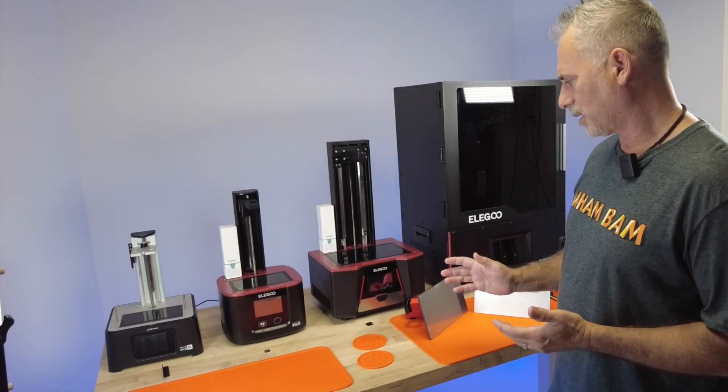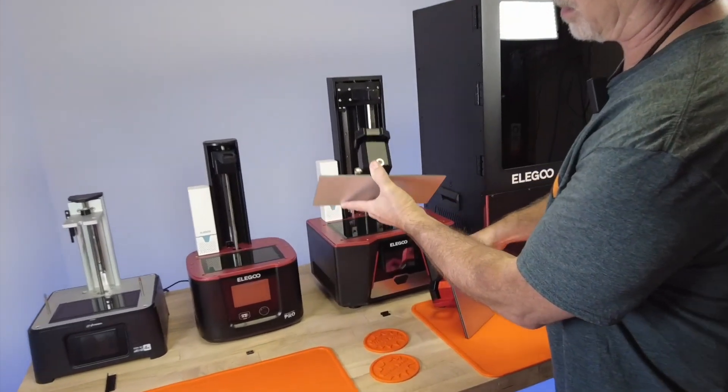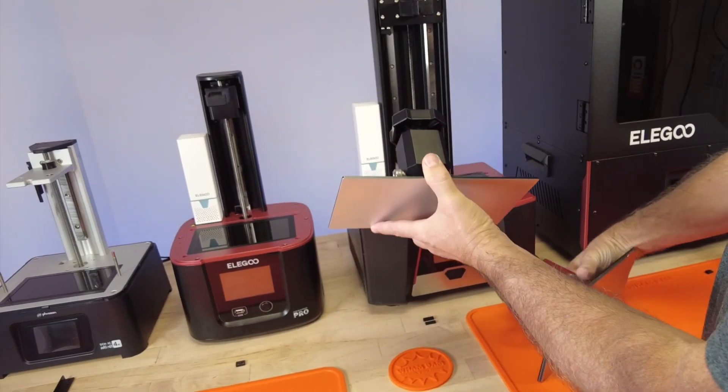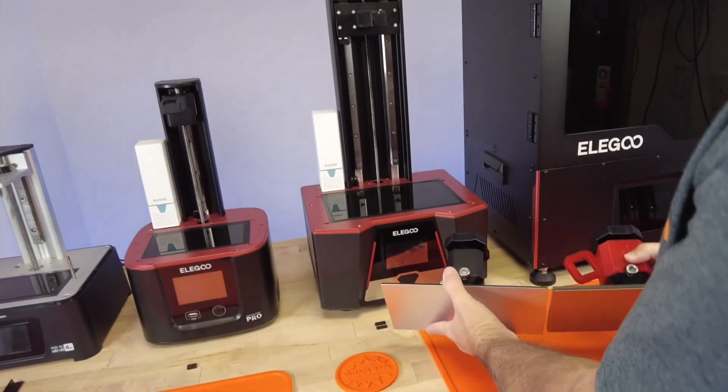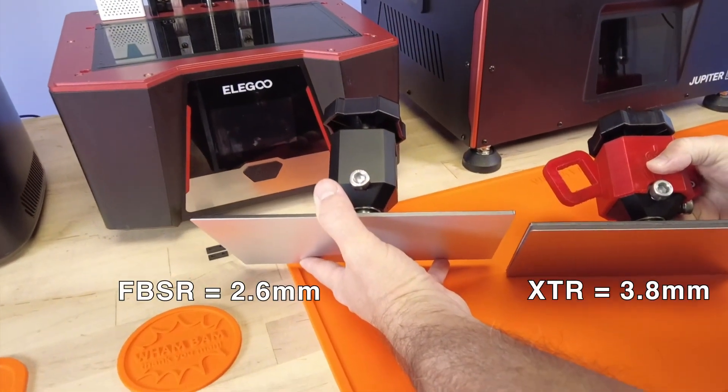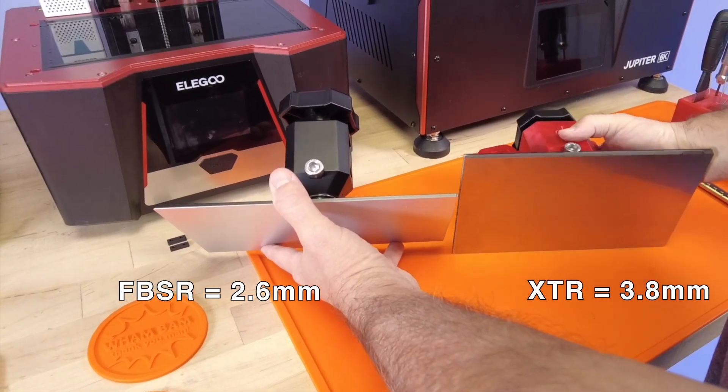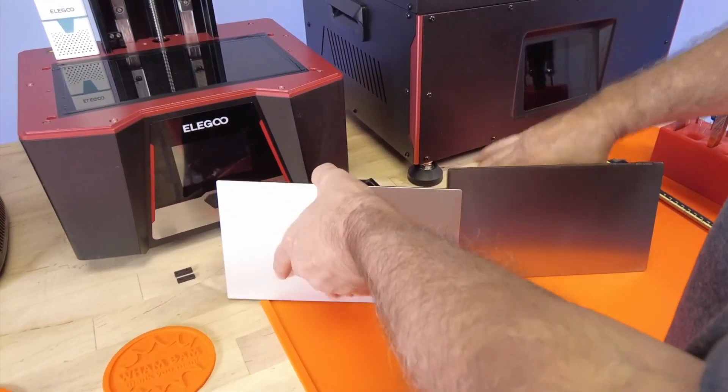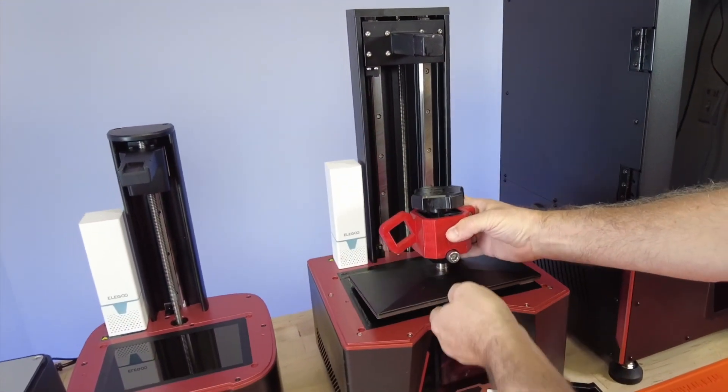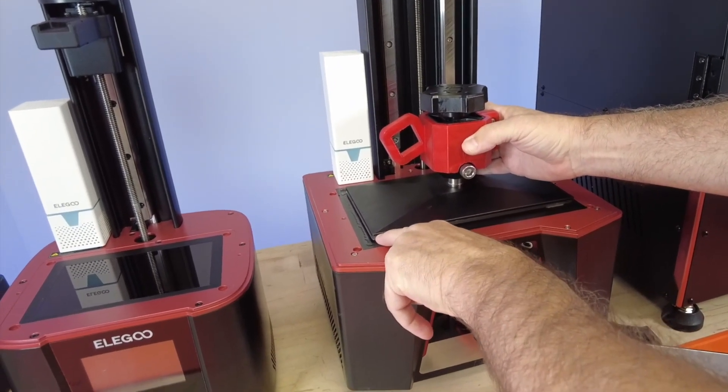So why do you need to adjust your Z limit? Well, the standard build heads are about this thick. When you add the Wham Bam flexible build system, you're adding either 2.6 millimeters of thickness between magnet and flexi plate or 3.8 if it's an XDR like this case. So we're adding extra thickness. That means when the machine comes down and homes, it's going to want to push through that screen by that distance as it gets to the home point.